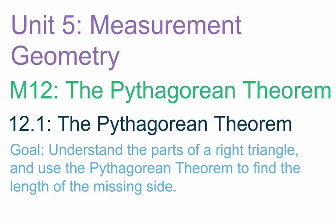With today's lesson, we're beginning a new unit and a new module. Our unit is going to be on Unit 5, which is on measurement geometry. And Module 12 is called the Pythagorean Theorem. In 12.1, we're going to learn about the Pythagorean Theorem. Our goal with this lesson is to understand the parts of a right triangle and use the Pythagorean Theorem to find the length of the missing side of the triangle.